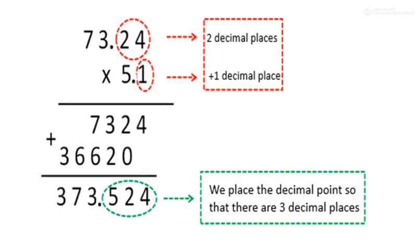One more example: 73.24 into 5.1. The answer is 373.524. How many places? 2 and 1 is 3. We place the decimal point so that there are 3 decimal places.